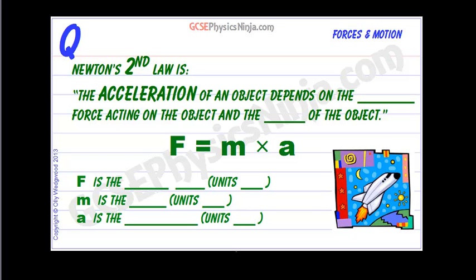Isaac Newton's second law of motion is all about how acceleration of an object, how much it speeds up, depends on two factors: its mass and the resultant force acting on the body.